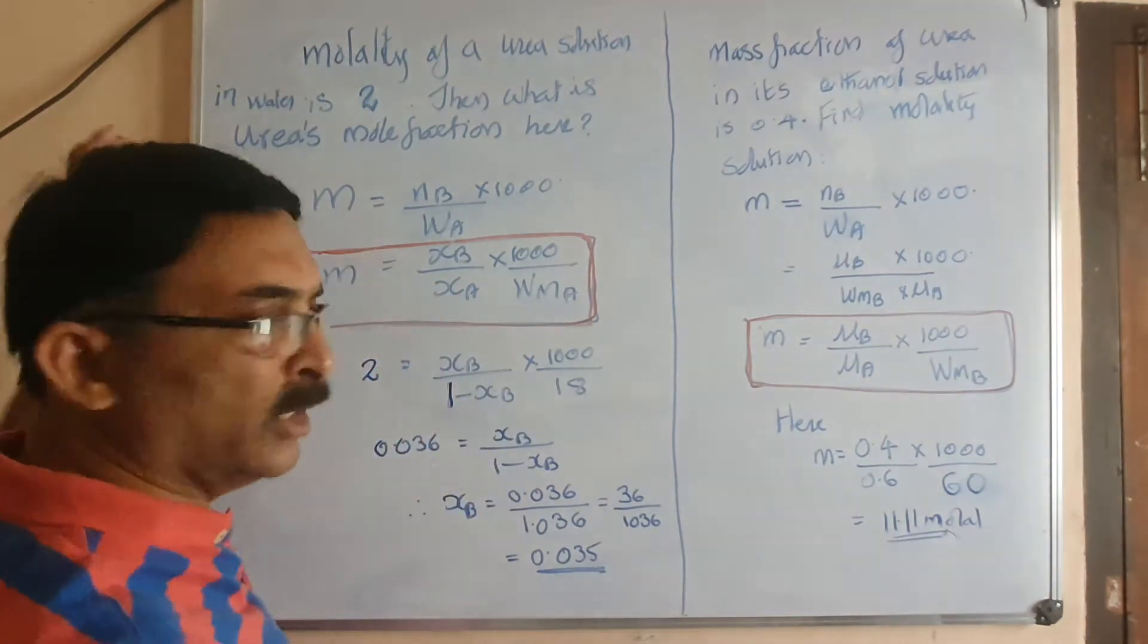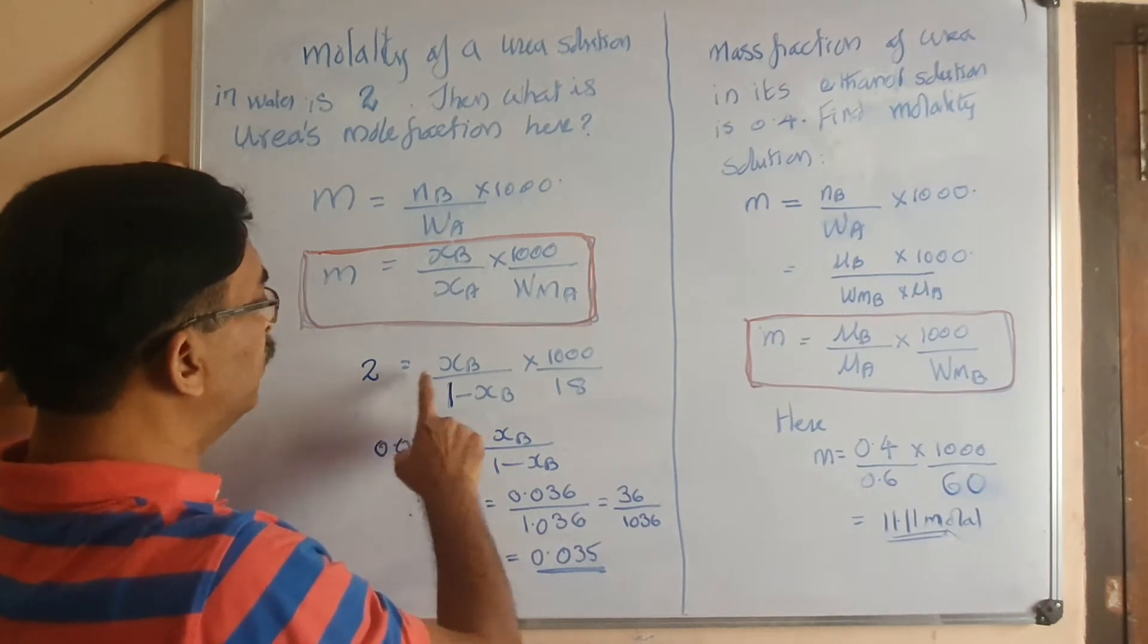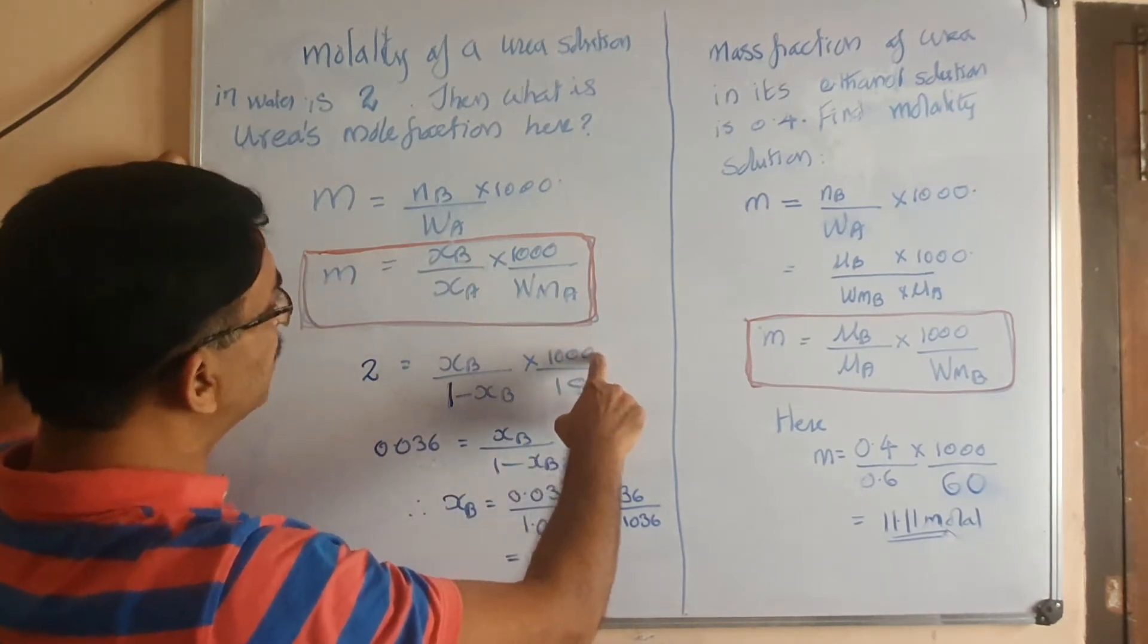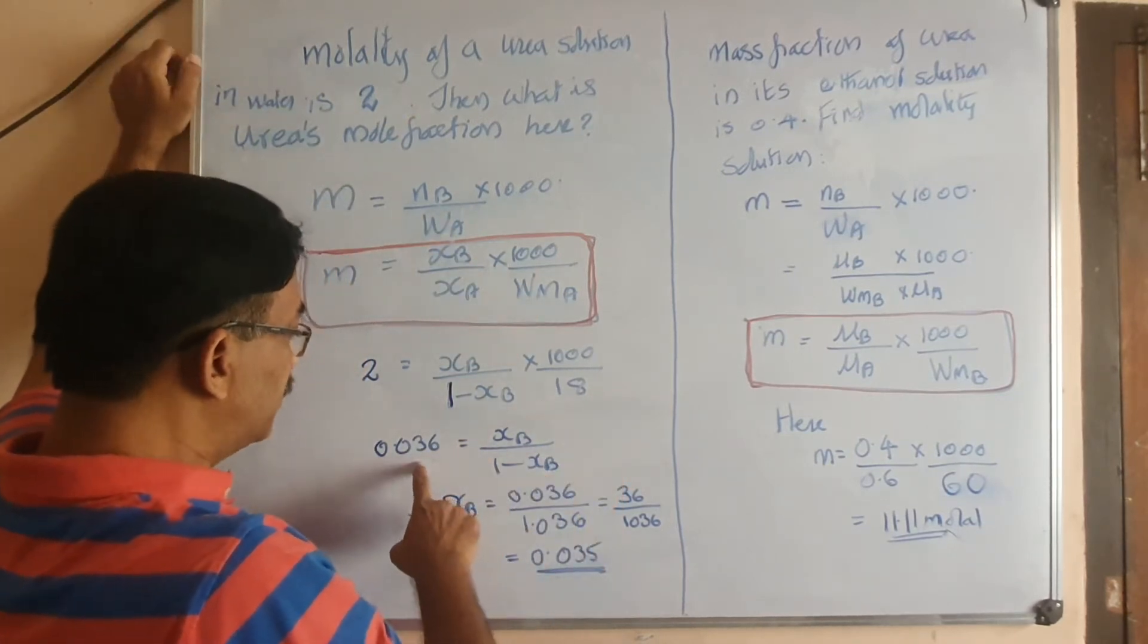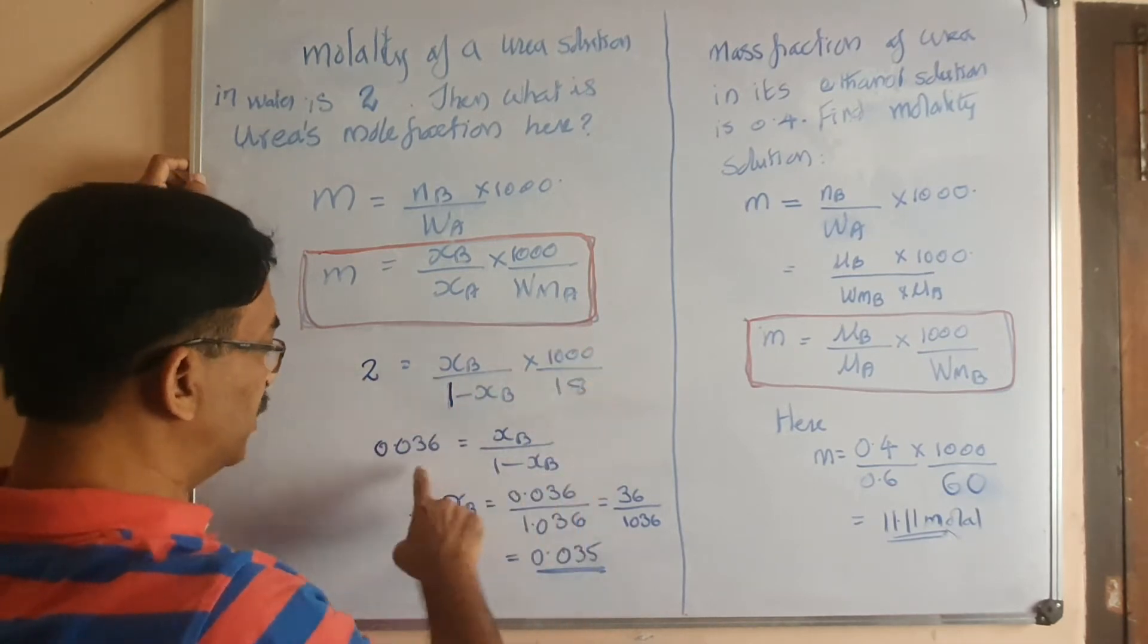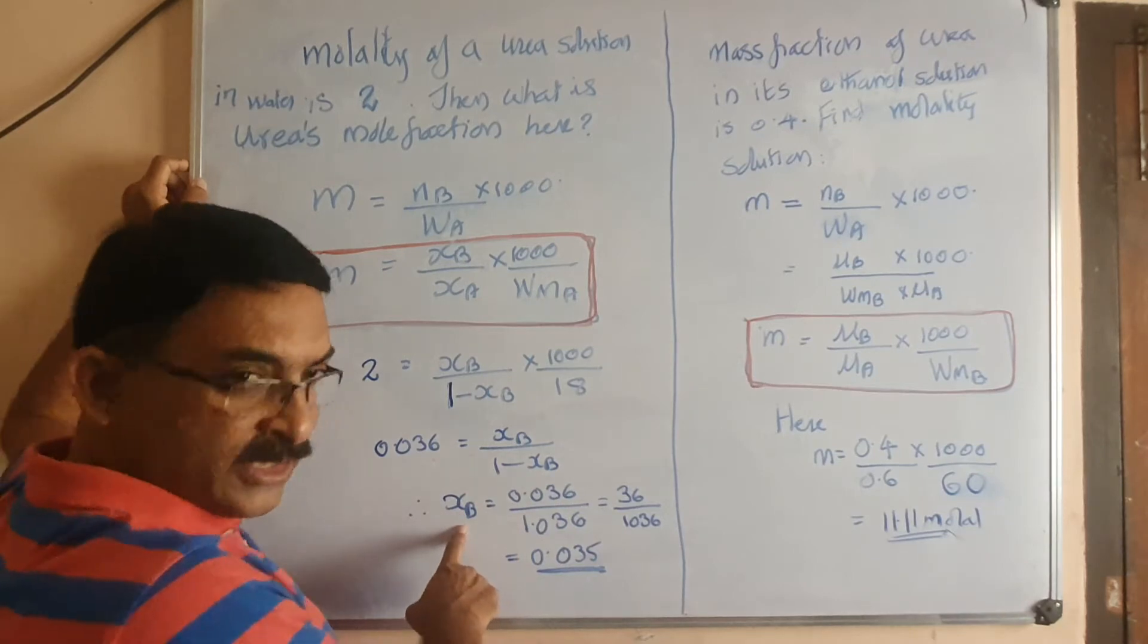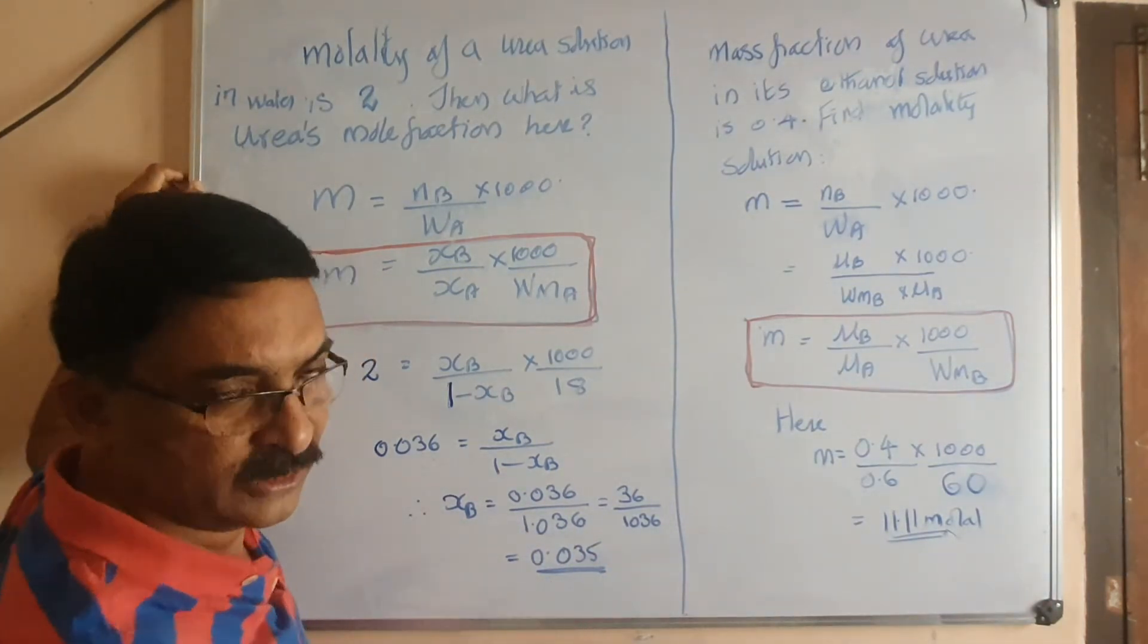Now we are going to substitute: 2 equals xb divided by 1 minus xb times 1000 by mass of solvent 18, being water. After cross multiplying, 2 times 18 by 1000 equals 0.036. Rearrange and isolate xb, you get it as 0.035. That's the mole fraction.